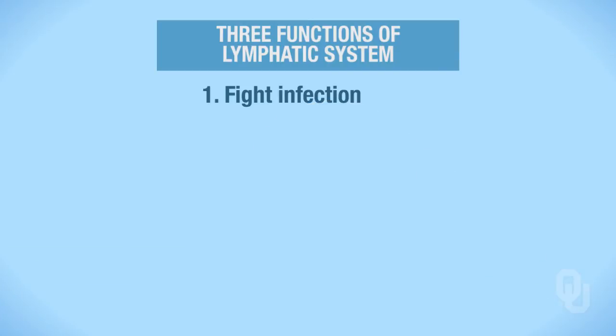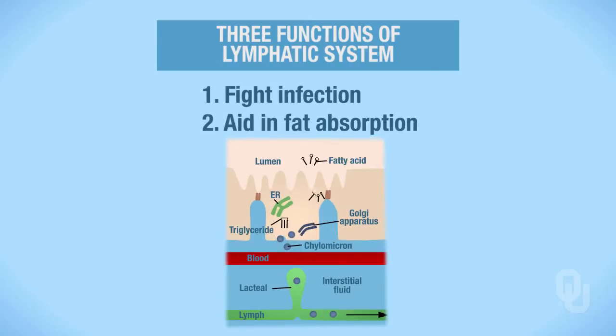The second function of the lymphatic system is to aid in fat absorption. Does this picture look familiar? So remember, once lipids are digested and absorbed into the epithelial cells lining the gut, they are reformed into a chylomicron, which then enters the lymphatic system and then into circulation.